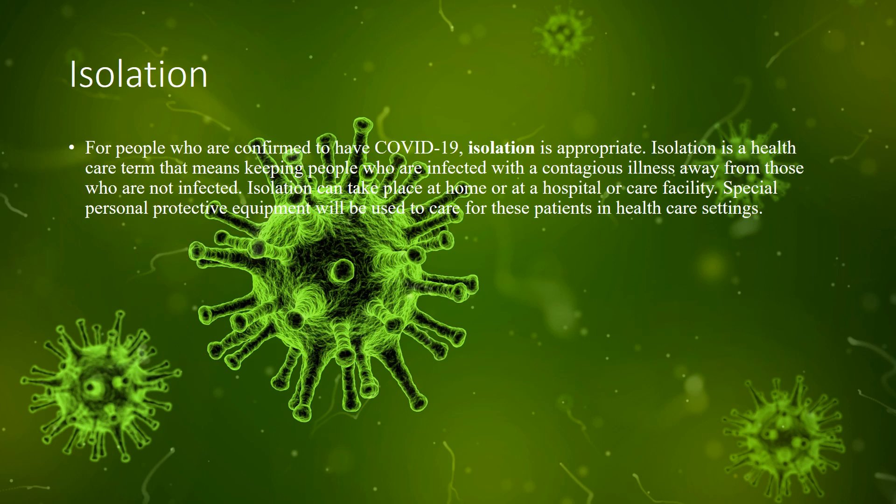The third measure is isolation. For people who are confirmed to have COVID-19, isolation is appropriate. Isolation is a healthcare term meaning keeping people infected with a contagious illness away from those who are not infected. Isolation can take place at home, or at a hospital or care facility. Special personal protective equipment will be used to care for patients in healthcare settings.